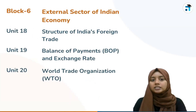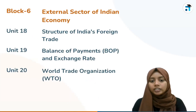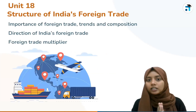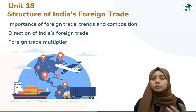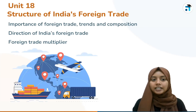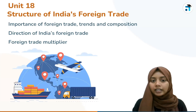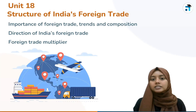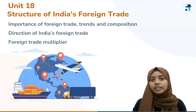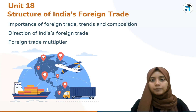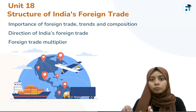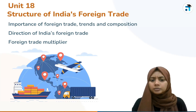In Block 6, we discuss the external sector of the Indian economy — trade activities. This includes the importance of foreign trade, trends, composition, and direction of India's foreign trade, as well as the foreign trade multiplier, exports, and imports.